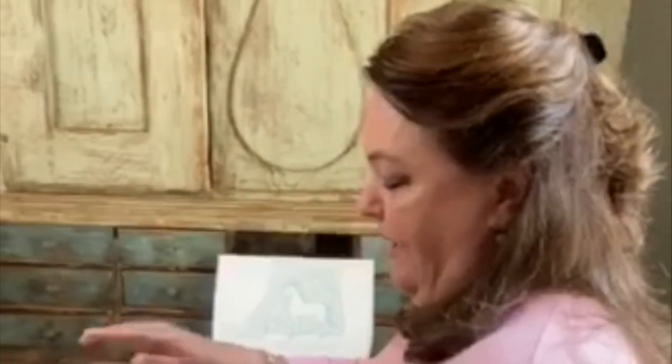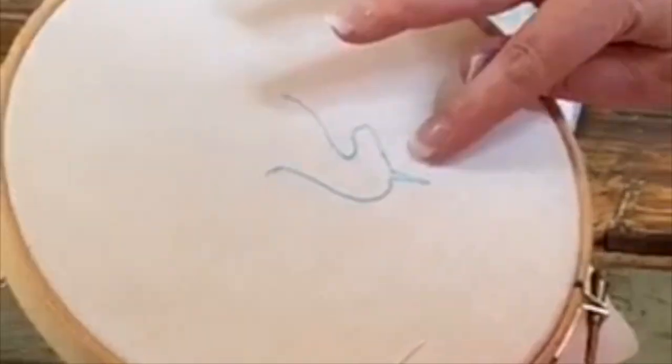So a couple of things before we start. It's easier if you have your design in the hoop upside down like this because you always work turkey work from left to right.